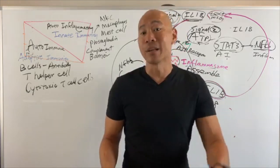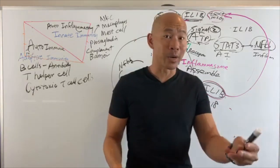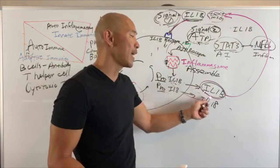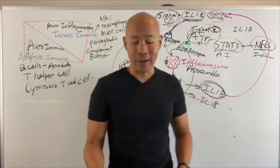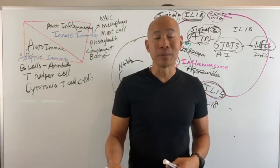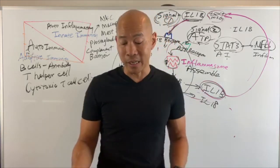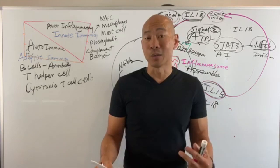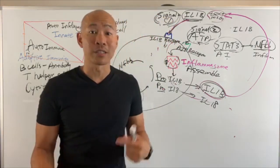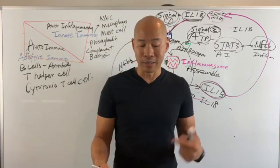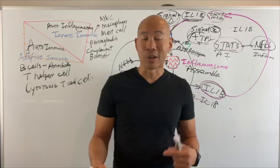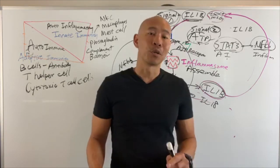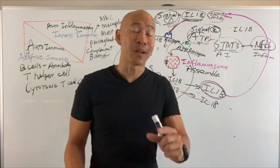Resveratrol is another flavonoid compound found in red grapes that can help reduce the activity of IL-1 beta. Other helpful compounds include EGCG found in green tea, ginseng, quercetin — a flavonoid found in citrus bioflavonoids and citrus fruits — gardenia, which is an herb, and propolis. These are just some examples of natural compounds.